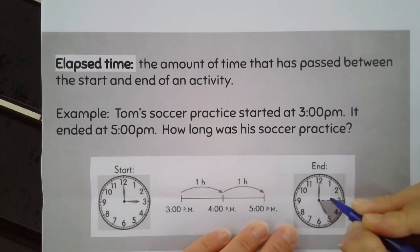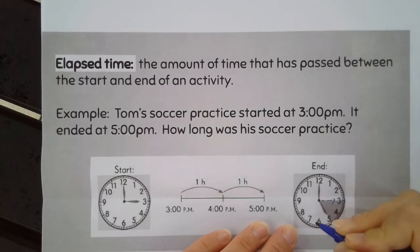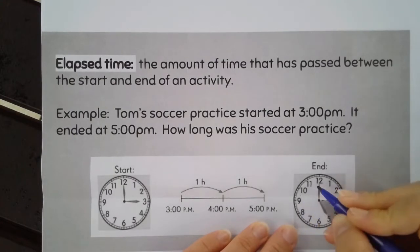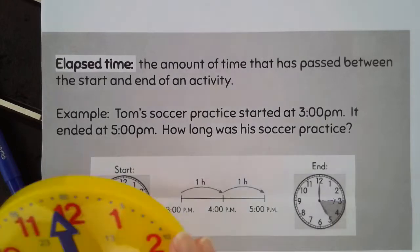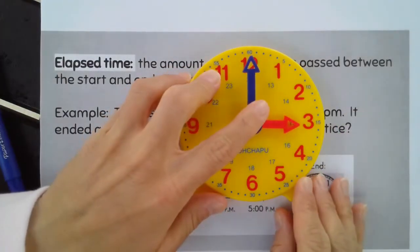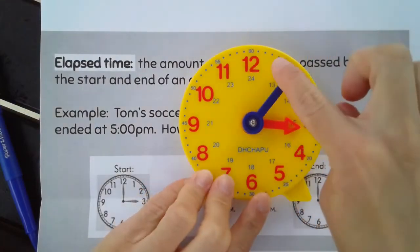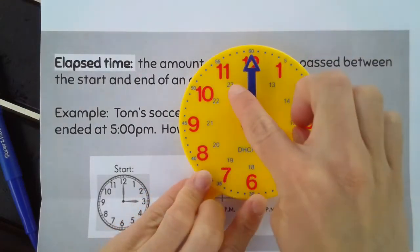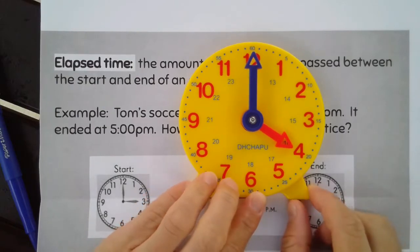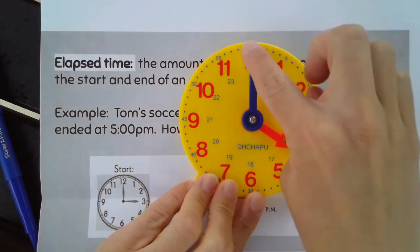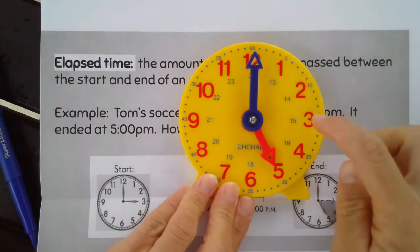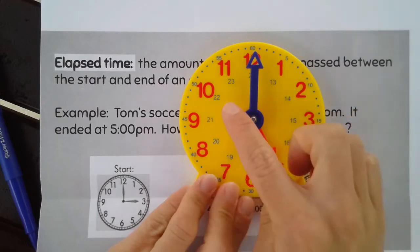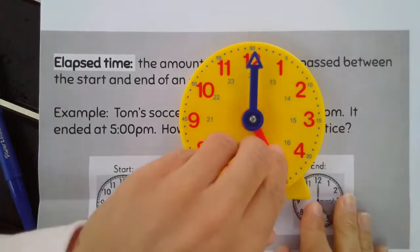So, the minute hand went all the way around the clock one full time and then two full times. Here's 3 o'clock. If I take my minute hand and go around the clock one full time, I have gone one hour. If I take my minute hand and go around the clock another full time, that is two hours. So, I went from 3 o'clock to 5 o'clock — I went around the clock twice, I went two hours. His soccer practice lasts two hours long.